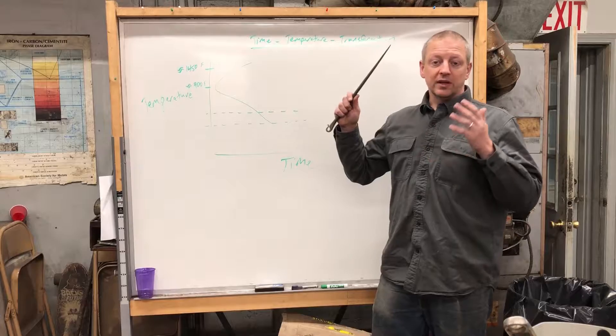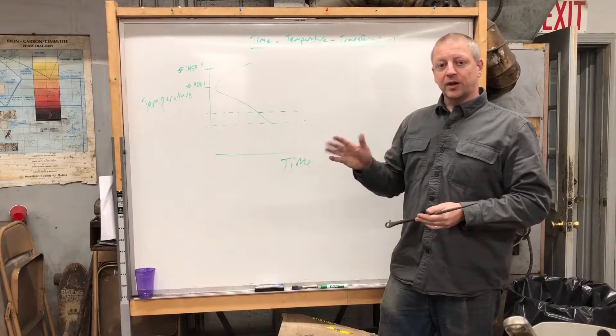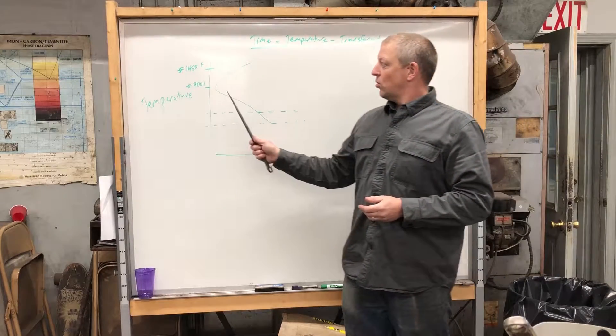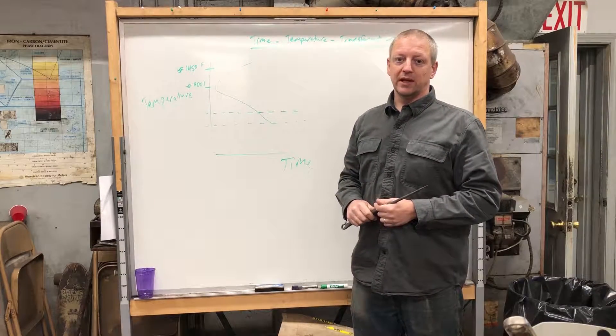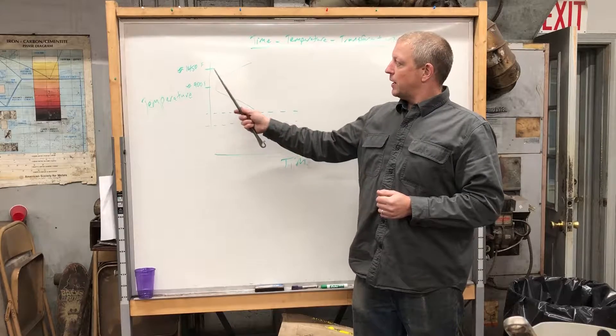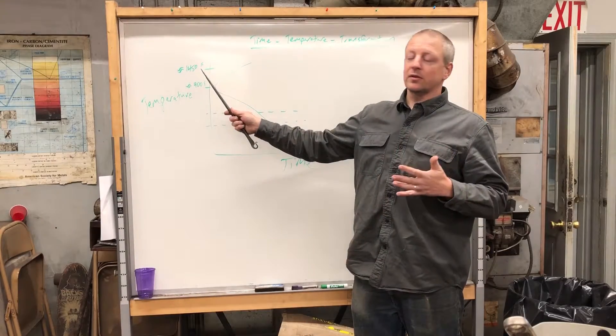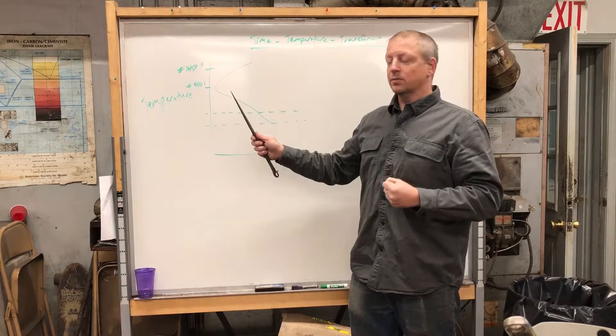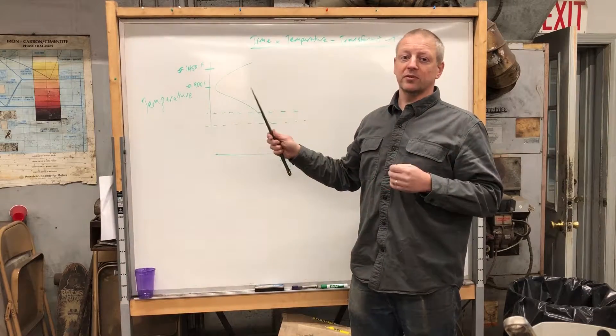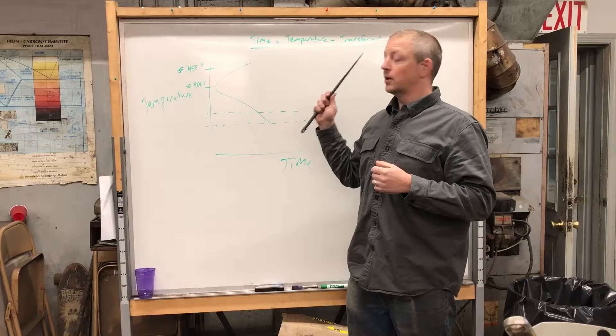We're going to leave all that aside. All we're talking about today is what this diagram says about straightening your blade during the quench. So you're up here at critical, you've got austenite, you quench, you missed the nose of the curve—good job, you've chosen the appropriate quench for your steel.